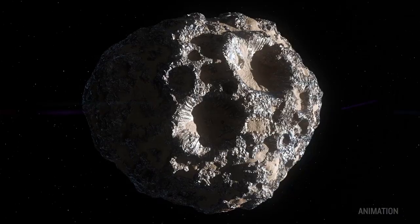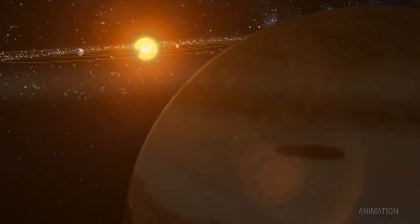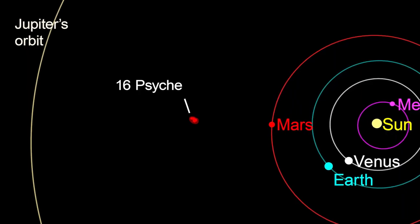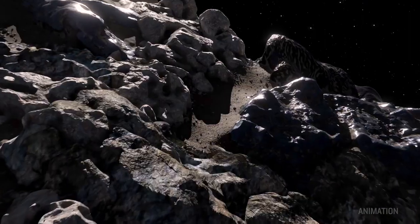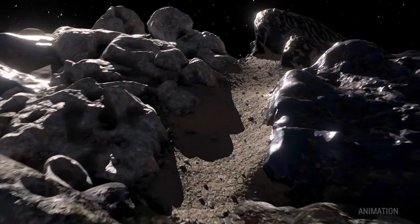There are probably two million asteroids in our solar system. The reason that Psyche is unique is that it is metal rich. It's believed that it may be a remnant core of an early planetesimal.